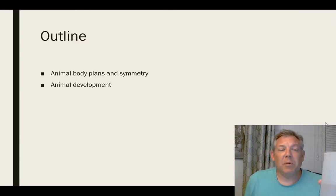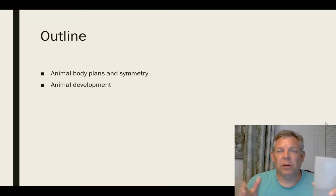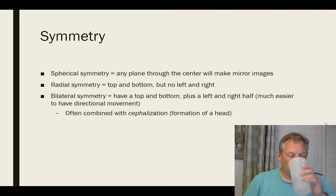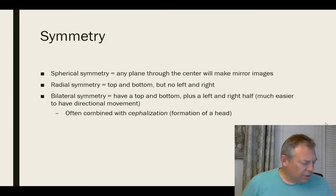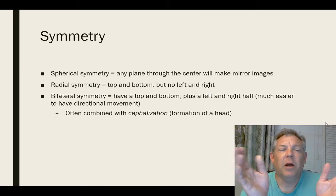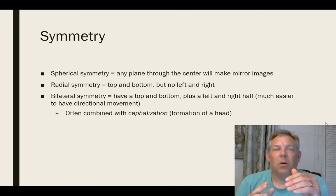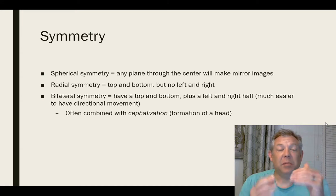We're going to talk about animal body plans and symmetry briefly, then we're going to talk about animal development, and then maybe a little bit about how we can use that to classify organisms. When we talk about symmetry first, we just need to cover some vocabulary — some different ways that organisms or animals can be symmetrical.